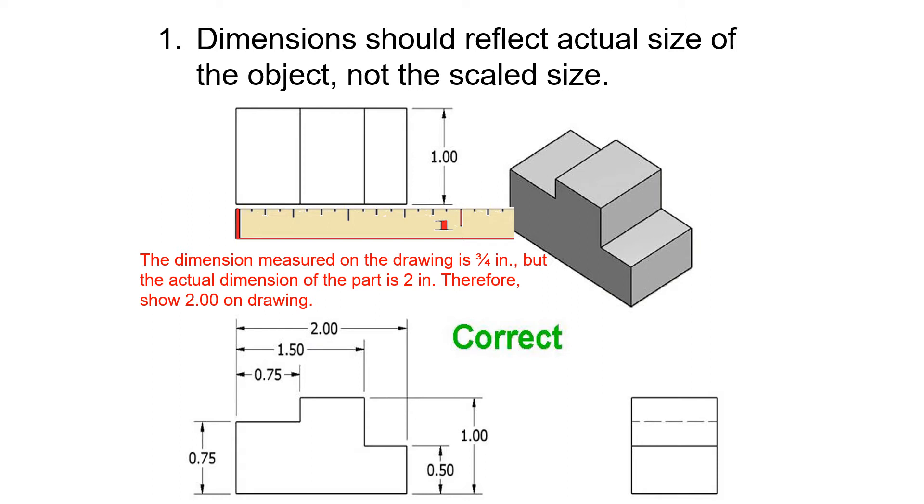Number two: include overall dimensions in the three principal directions—width, height, and depth. This is a good place to start. Overall dimensions should be placed the greatest distance away from the object so that intermediate dimensions can nest closer to the object. Don't make them the closest, then you're forced to make your other dimensions cross over. They should be further away, and then you nest the smaller dimensions within that.